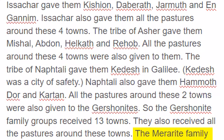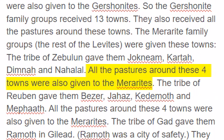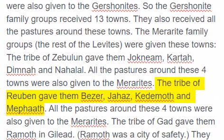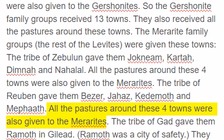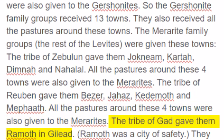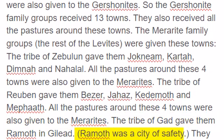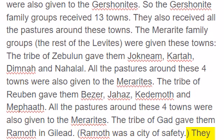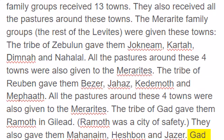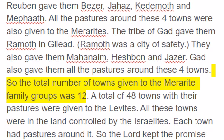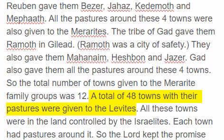The Merarite family groups, the rest of the Levites, were given these towns. The tribe of Zebulun gave them Jhonium, Karta, Dimna and Nahalal, and all the pastures around these four towns. The tribe of Reuben gave them Bezer, Hahaz, Kadimoth and Mephoth, and all the pastures around these four towns. The tribe of Gad gave them Ramath in Gilead. Ramath was a city of safety. They also gave them Mahanaim, Heshbon and Jazur, and all the pastures around these four towns. So the total number of towns given to the Merarite family groups was twelve.